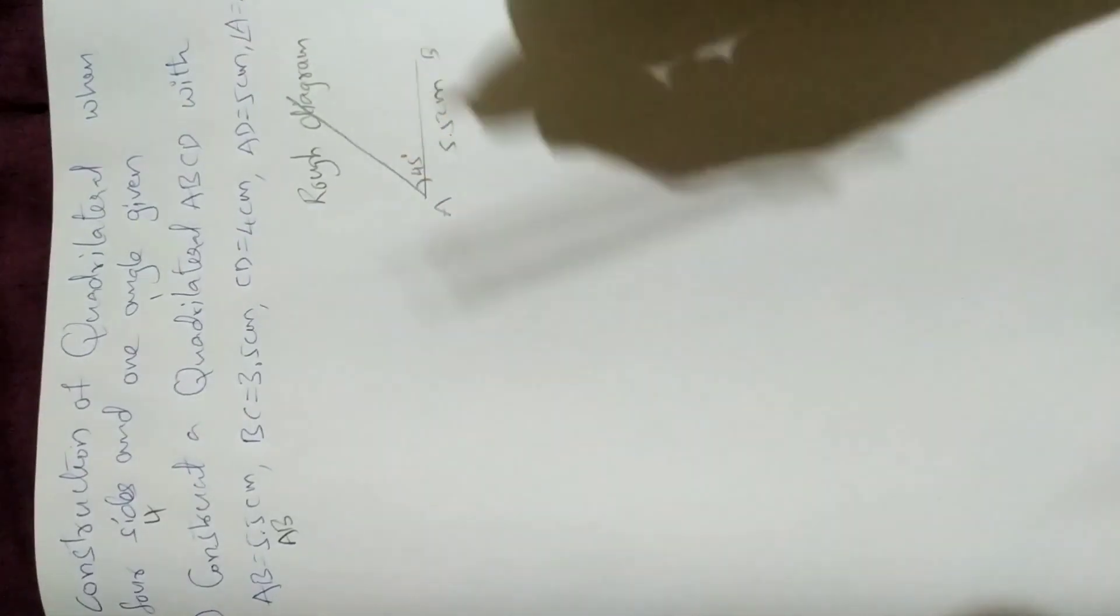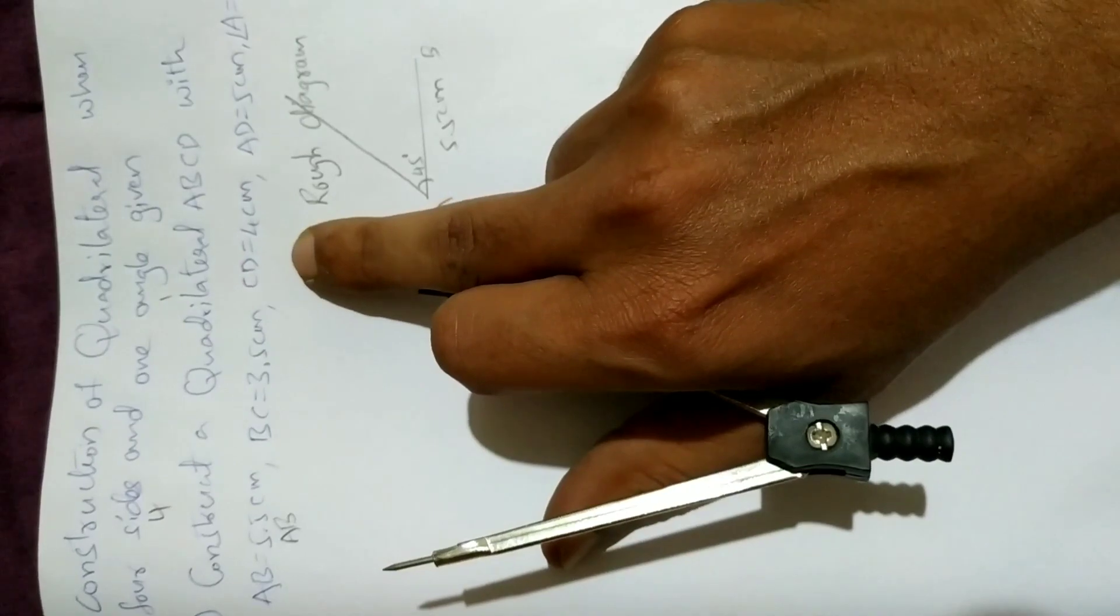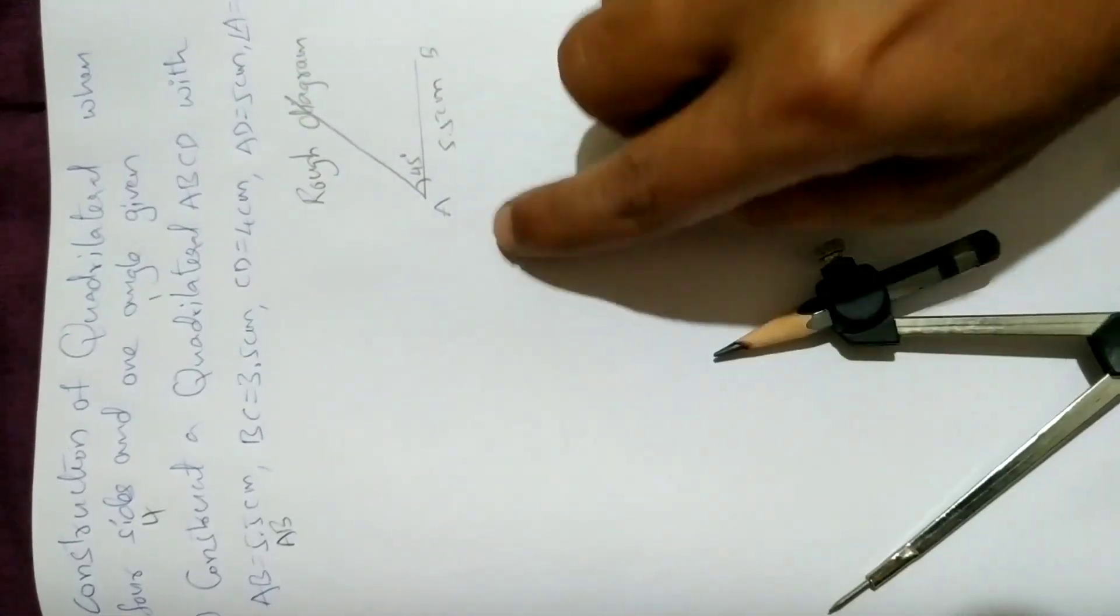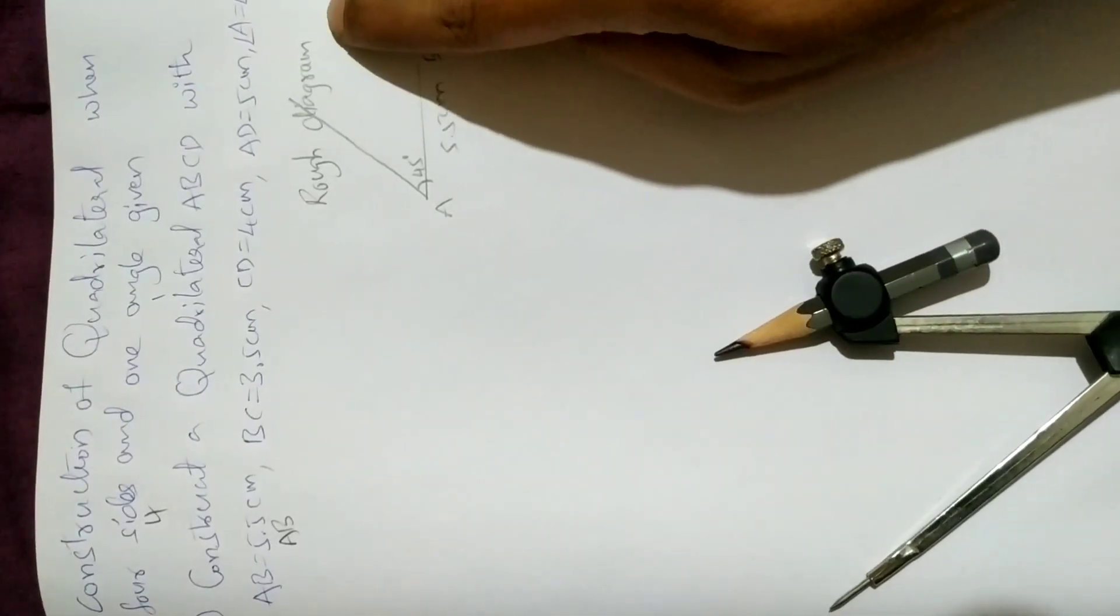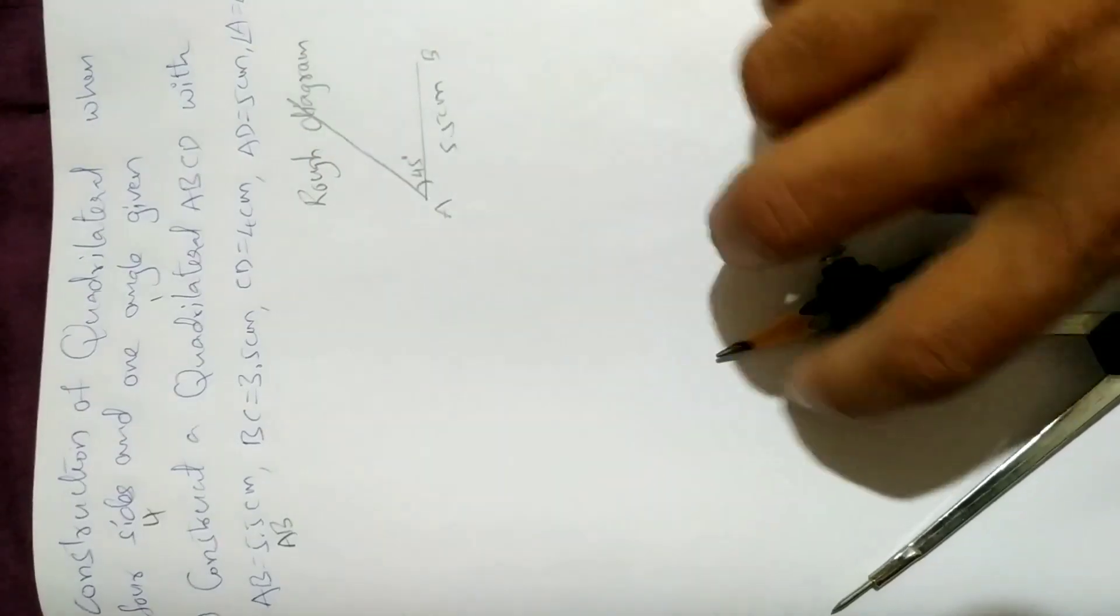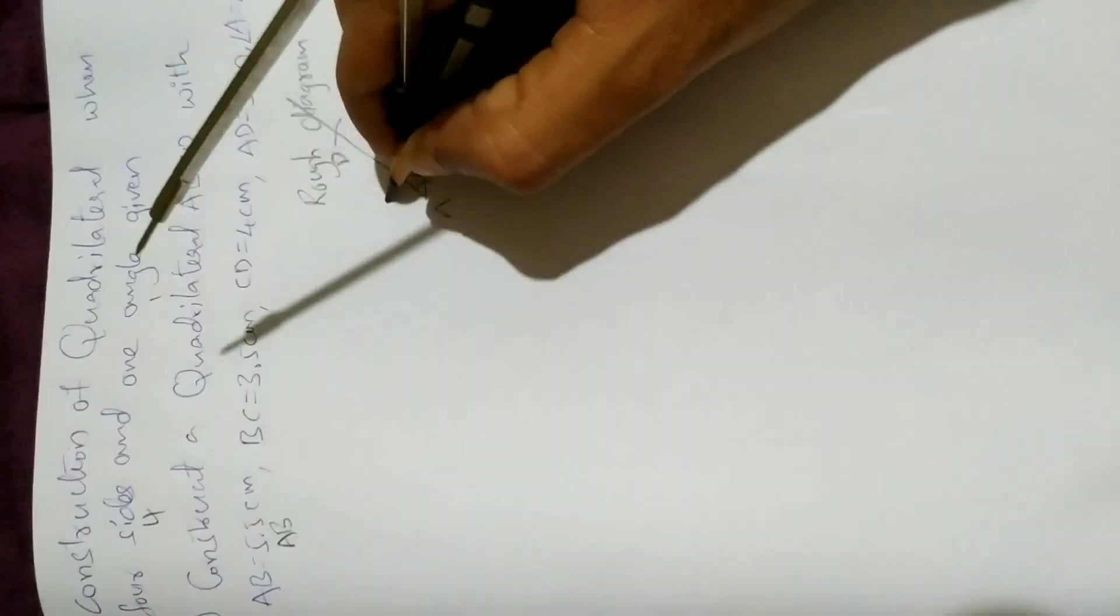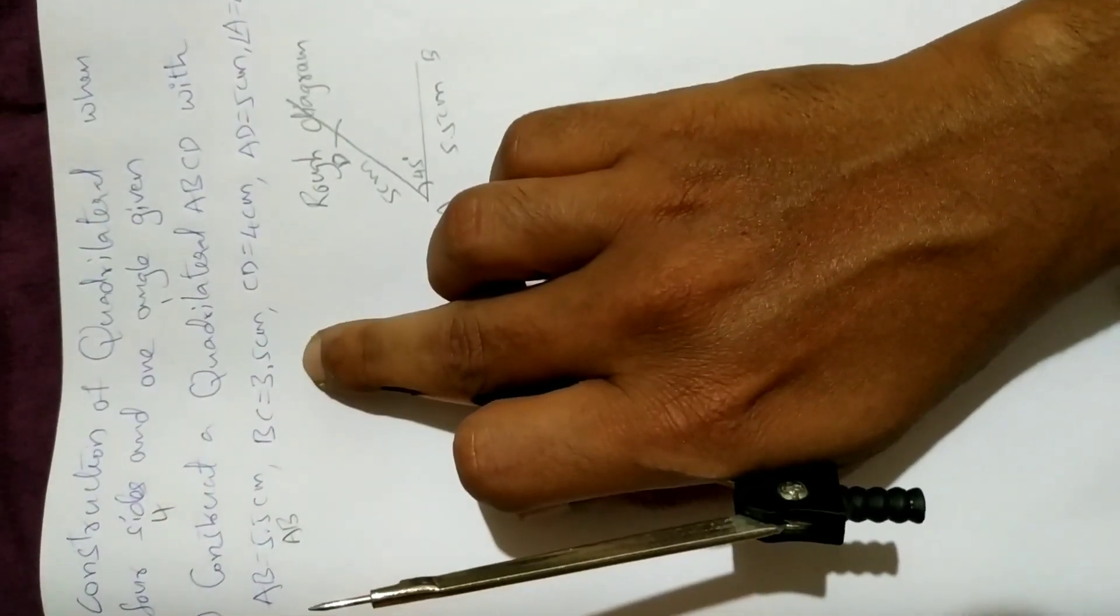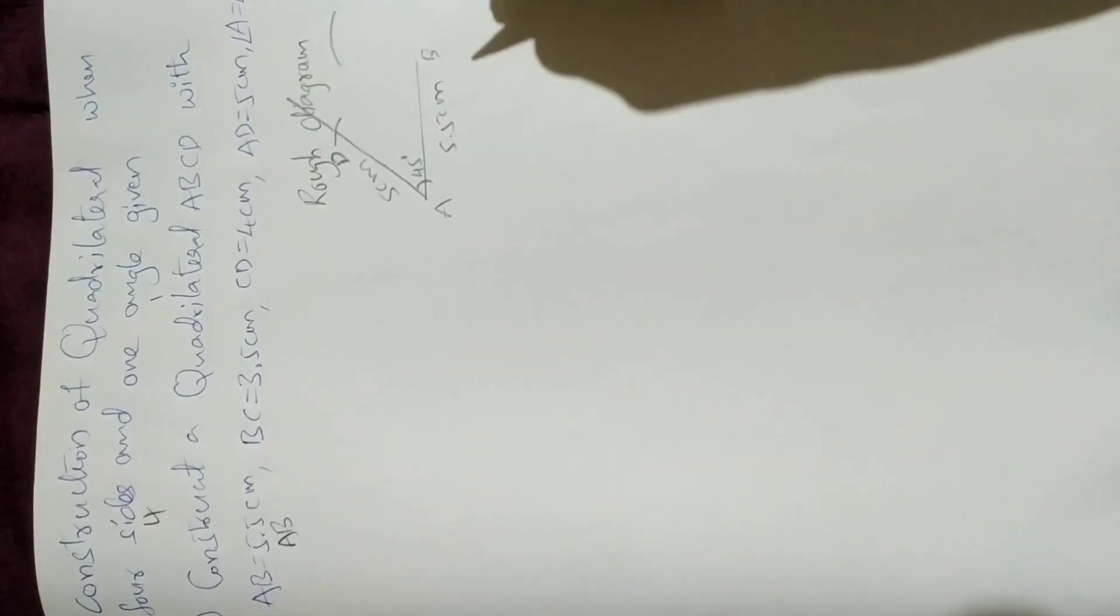Next, we have BC 3.5 centimeters, CD 4 centimeters, and AD 5 centimeters. We have AD length, so with 5 centimeters radius from A, draw an arc. So this point is D, the length is 5 centimeters.